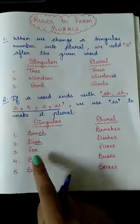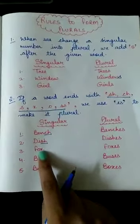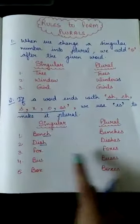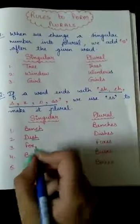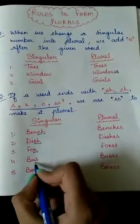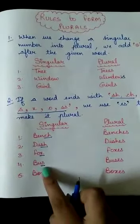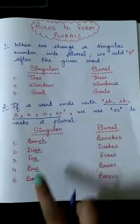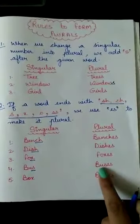Fox. Again, we are having X. And that is in this list. Foxes. Right? Bus. Now, this word is ending with S. S is over here in this list. So, what will we say? Buses. B, U, S, E, S.